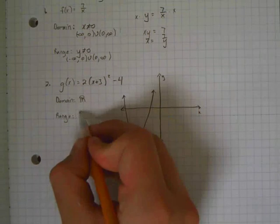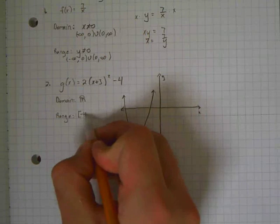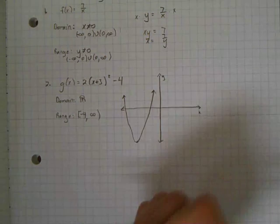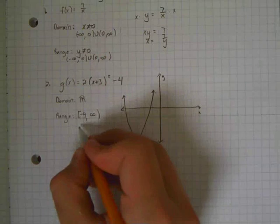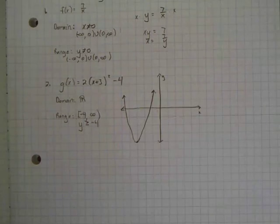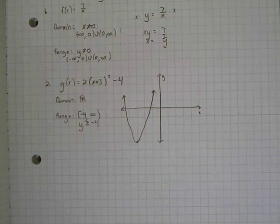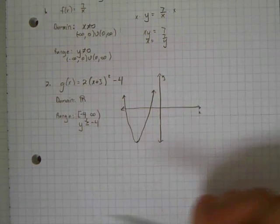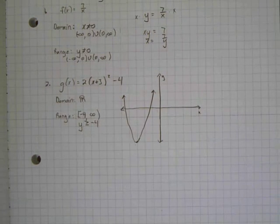So the range is going to be starting at negative 4, including negative 4, all the way to infinity. Another way you could write it is y is greater than or equal to negative 4. Depending on what your teacher wants, your teacher may want interval notation or inequality notation.